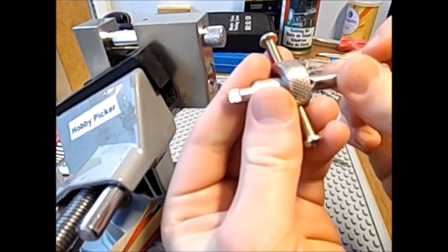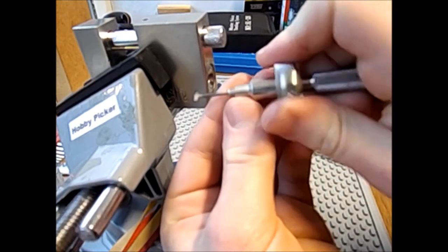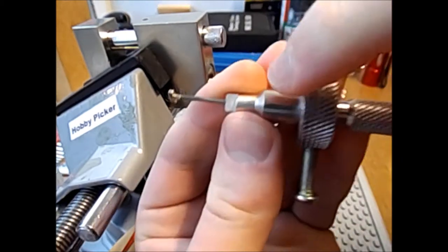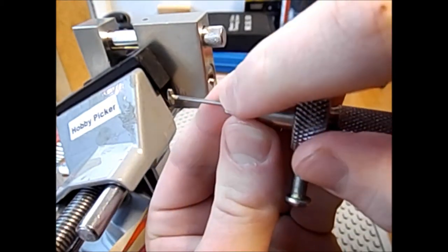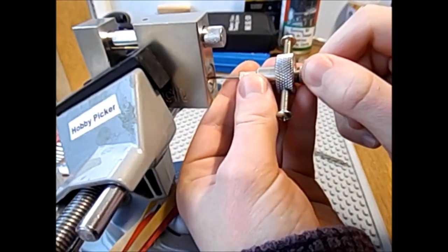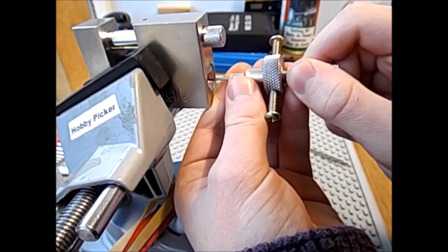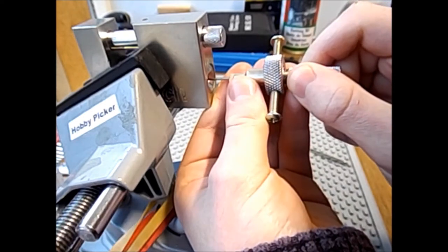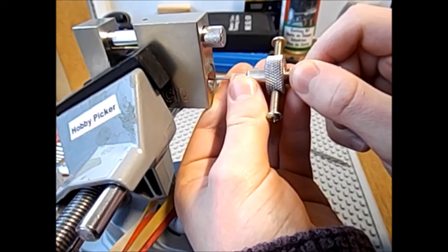You have to be really careful, and what I like to do is I like to stick my pick in. I like to rotate the second disk just a touch counterclockwise, so that when I do stick the pick in to tension the lock, it doesn't go all the way in.